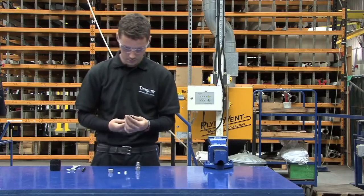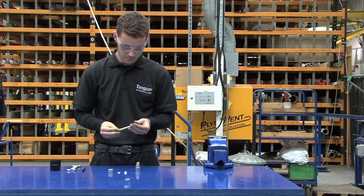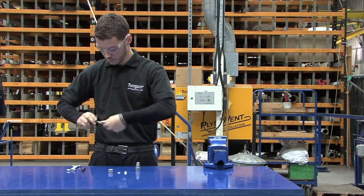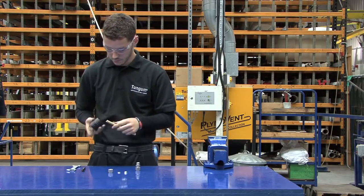Good work practice is to check that the ferrules are correctly orientated prior to assembly. Check that the tube end is cut square and deburred before assembly.